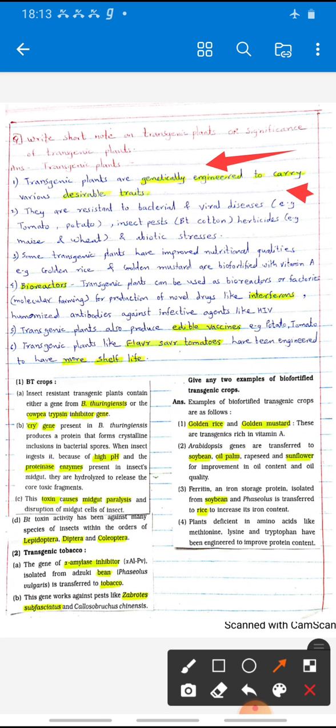They are resistant to bacterial as well as viral diseases, for example tomato and potato. Some are useful against insect pests, for example Bt cotton. Some are herbicide resistant, for example maize and wheat, and resistant to abiotic stresses.